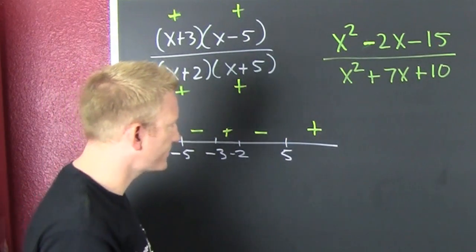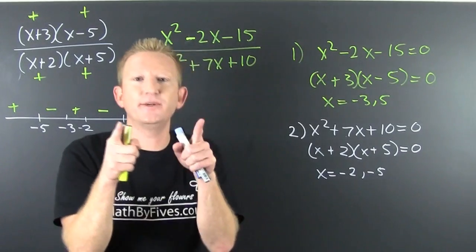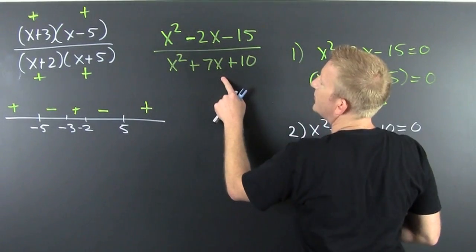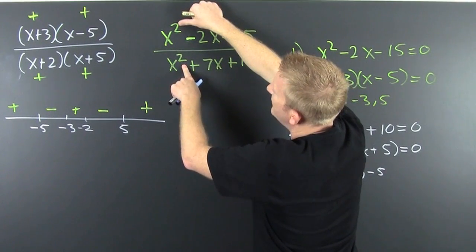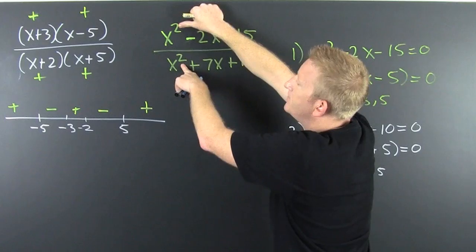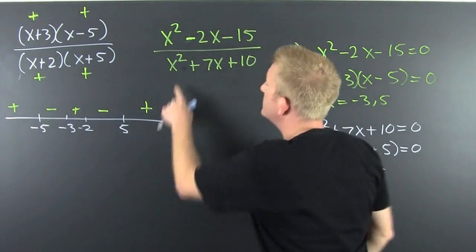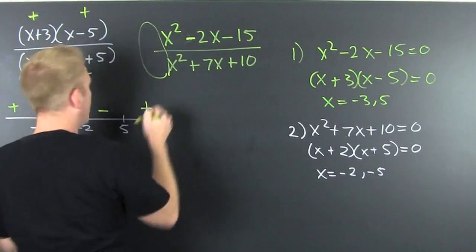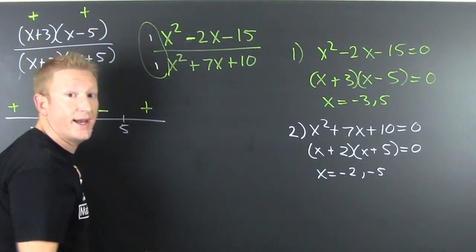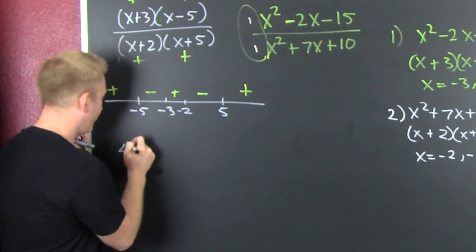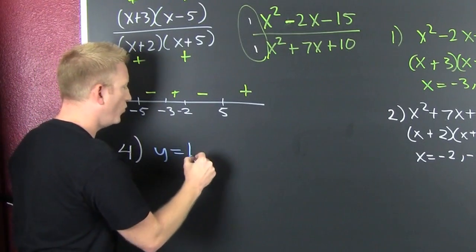Now we look at the end behavior. To see the end behavior, you look at the degree of the numerator and denominator. If they are the same, it doesn't go to infinity and it doesn't go to zero — your asymptote goes to the quotient of the leading coefficients. Here both my leading coefficients are 1. So my horizontal asymptote, step 4, is going to be at y equals 1.